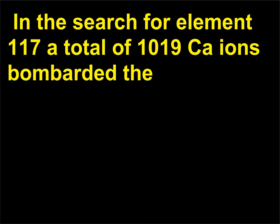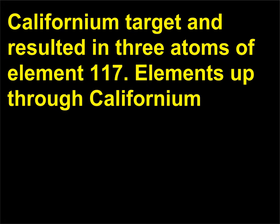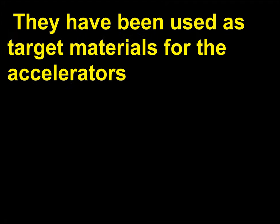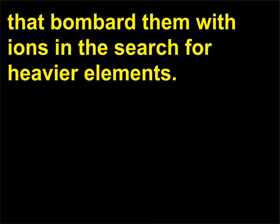In the search for element 117, a total of 10^19 calcium ions bombarded the californium target and resulted in three atoms of element 117. Elements up through californium (98) have been produced in milligram or gram quantities and have been used as target materials for the accelerators that bombard them with ions in the search for heavier elements.